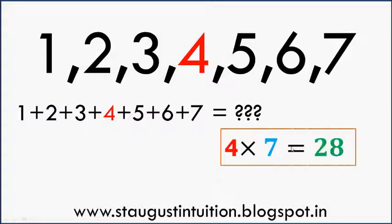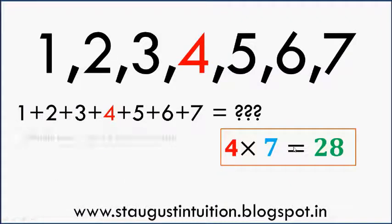So 4 into 7 is 28. The middle term — that is 4 into number of terms. 7 is 7 into middle terms, that is 4. So, middle term into number of terms is the sum.